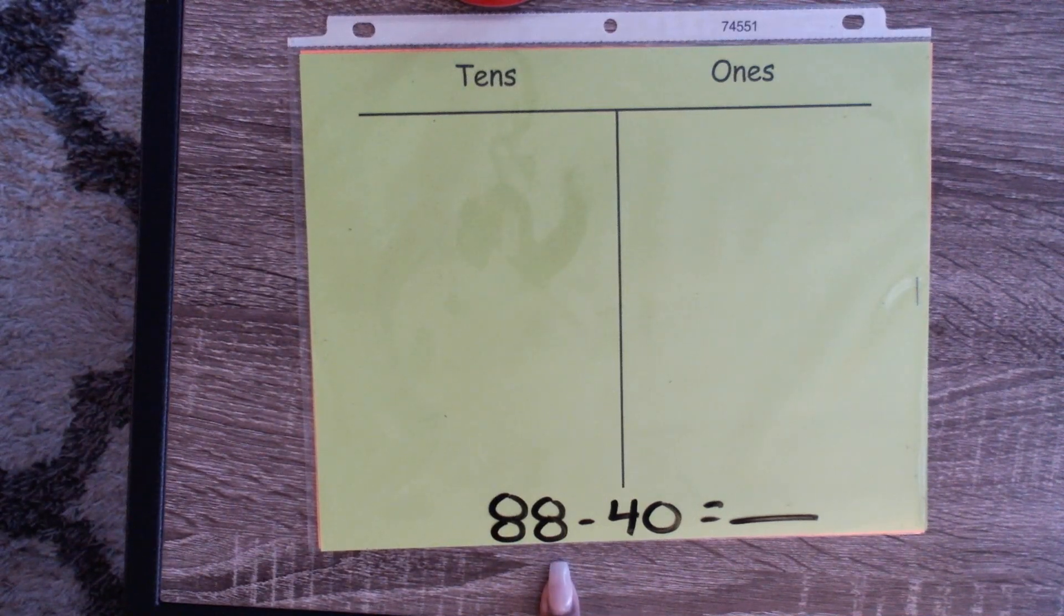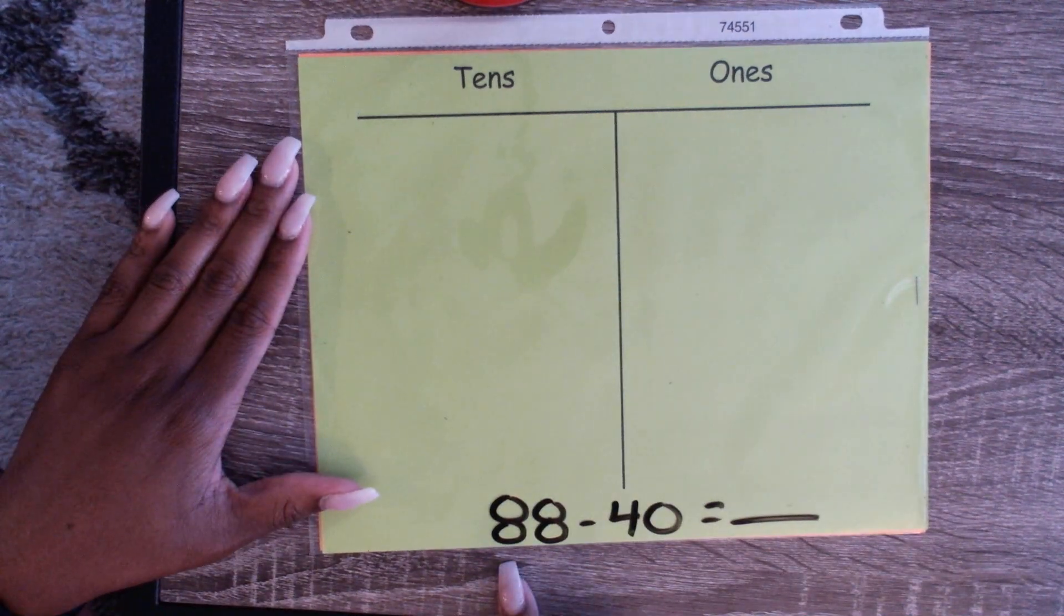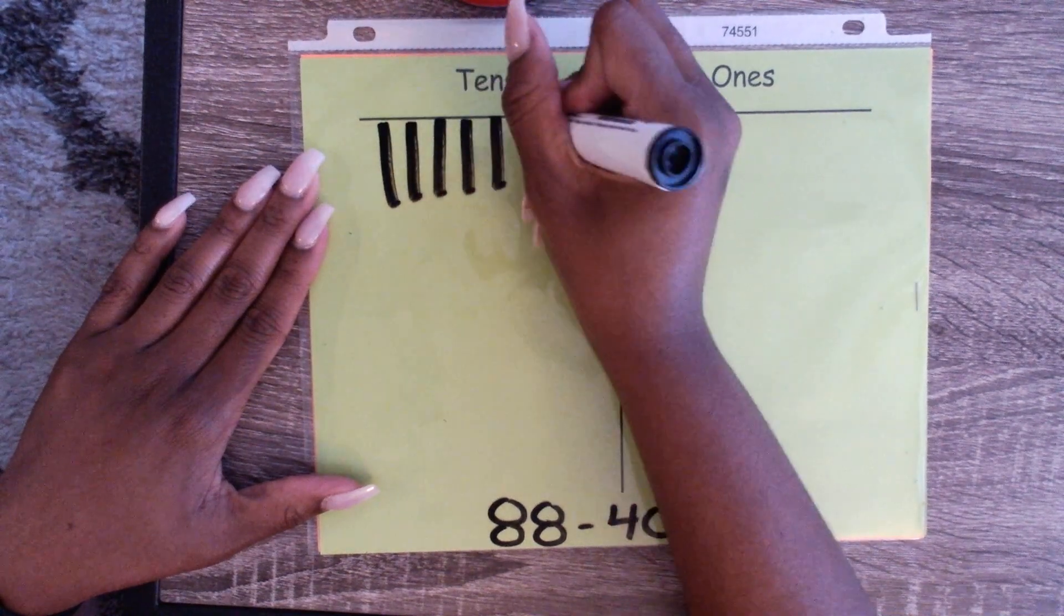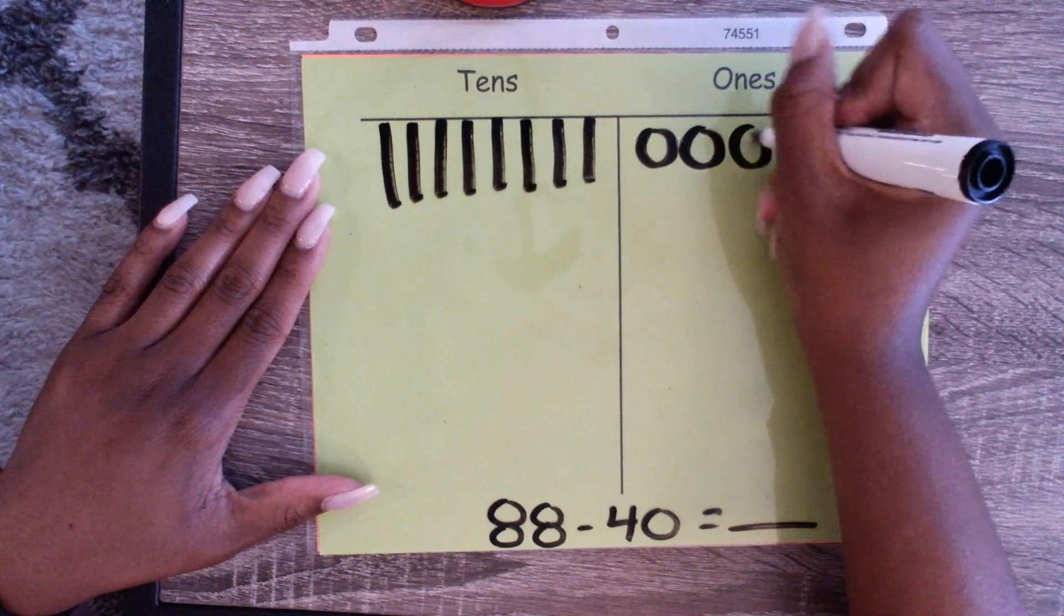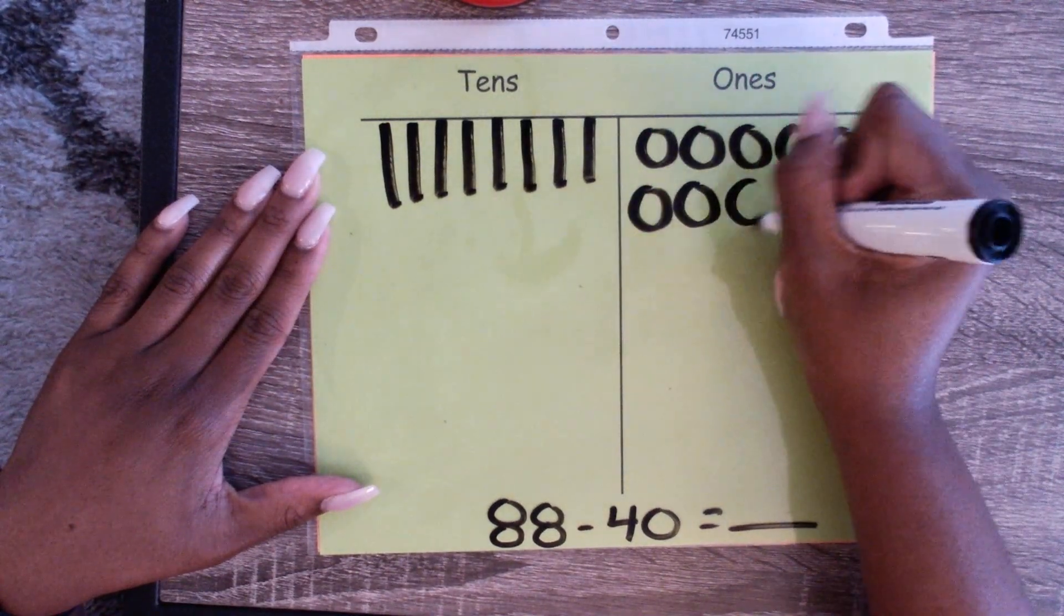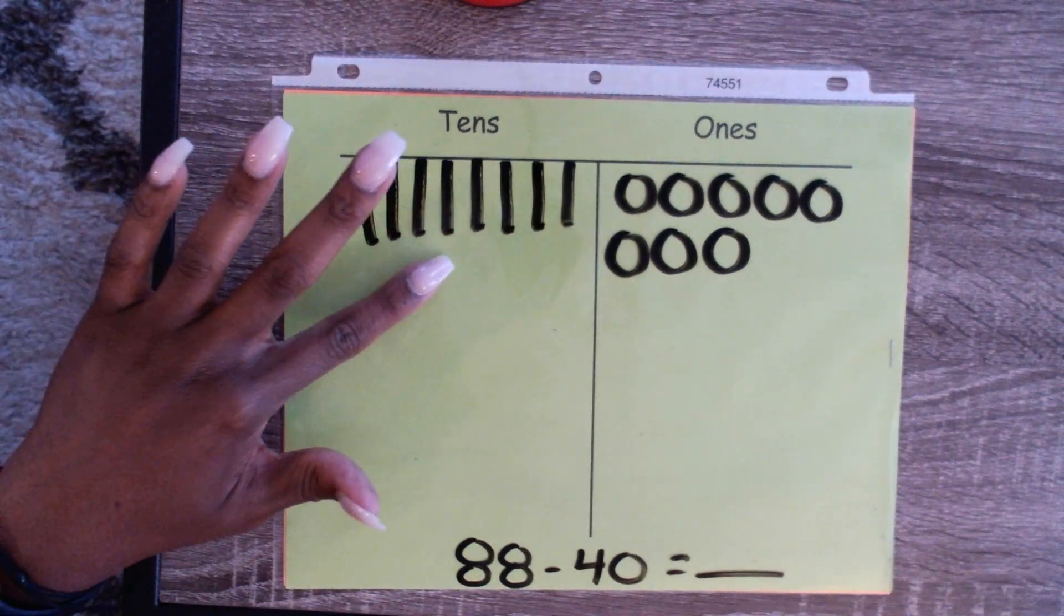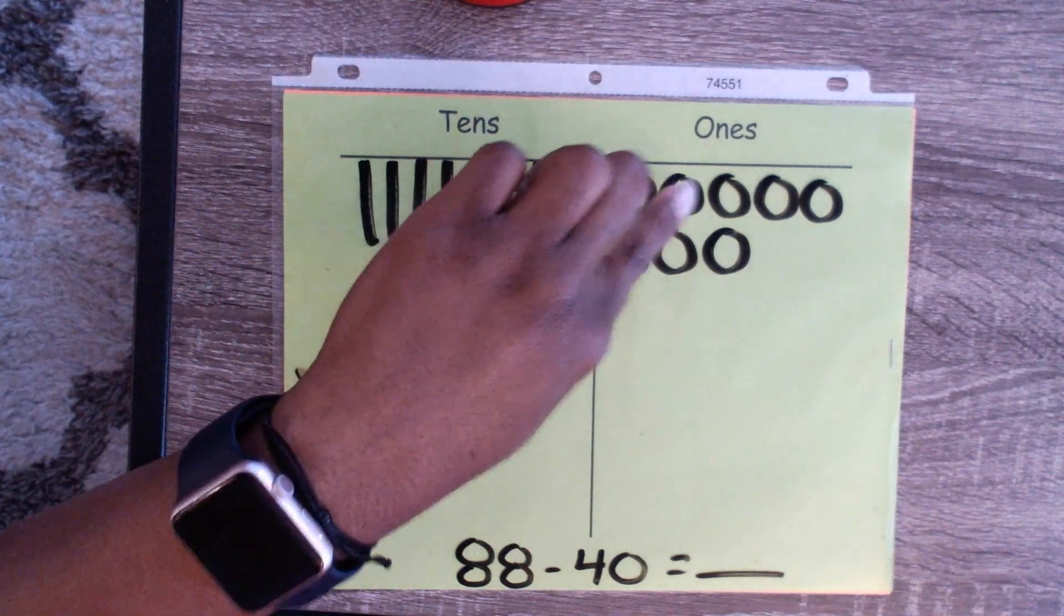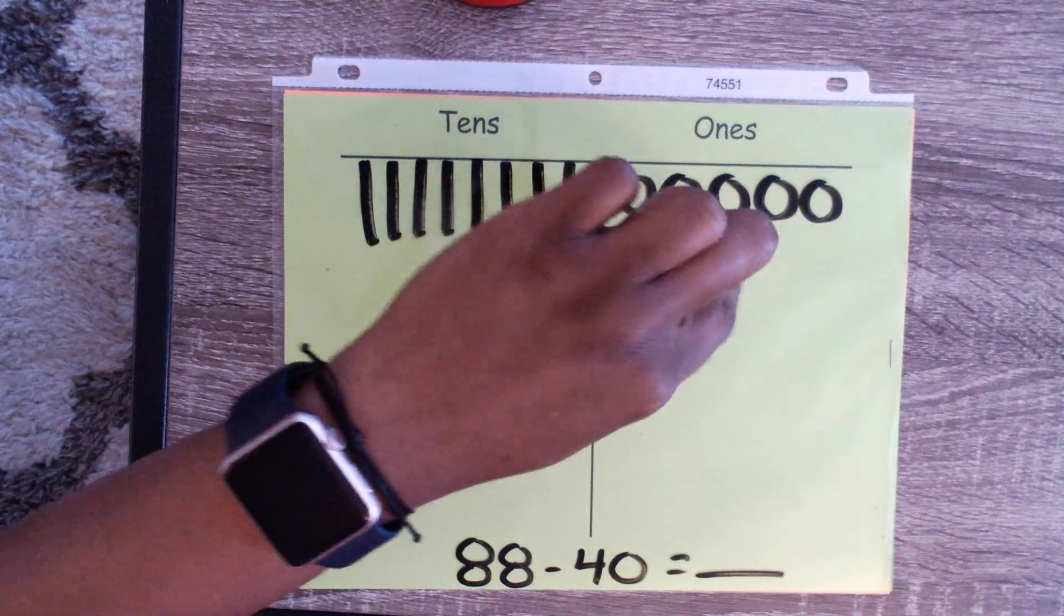Remember, when you're taking away, the bigger number always goes first. So let's build 88. We need 8 tens and 8 ones. One, two, three, four, five, six, seven, eight. Let's make sure we have 88. Let's count: 10, 20, 30, 40, 50, 60, 70, 80, 81, 82, 83, 84, 85, 86, 87, 88.